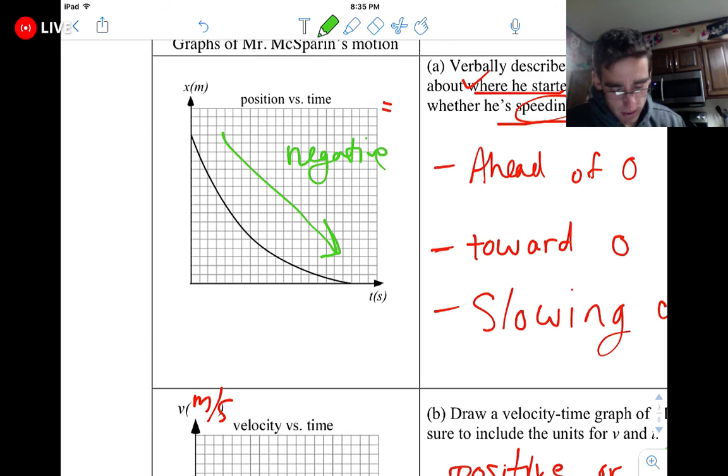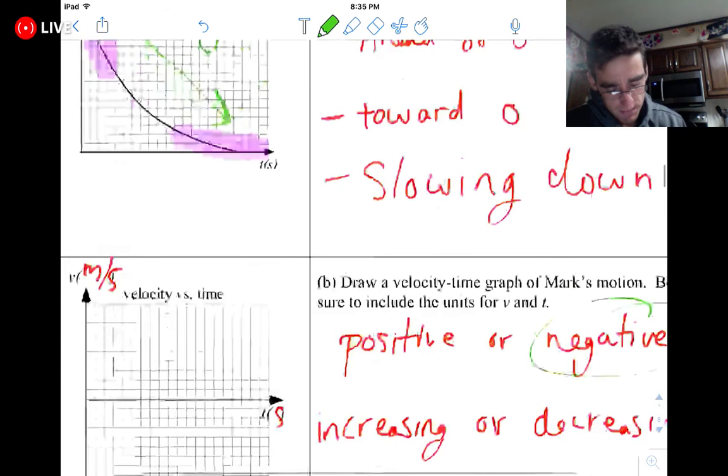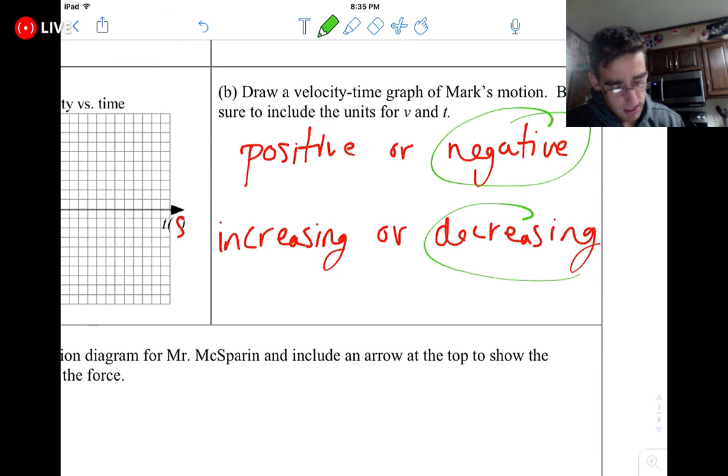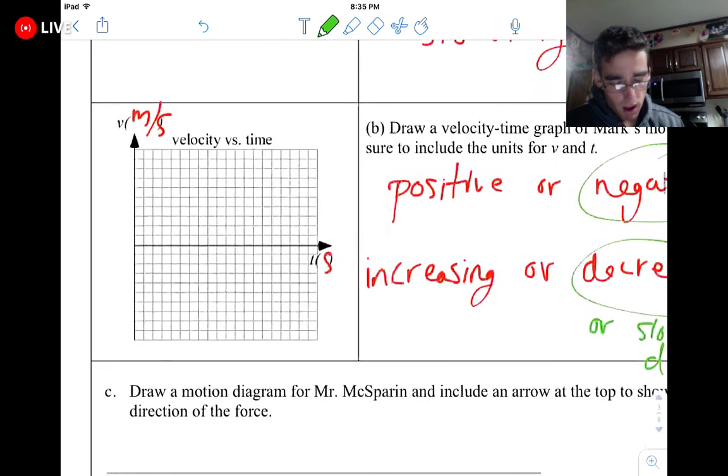Now the other thing I want to know is increasing or decreasing. So, again, we think about the little man. So is it getting steeper or less steep? Well, this starts off steep, and it gets less steep. So that means, to me, I'm seeing decreasing. Or we could also say slowing down. Maybe slowing down is a better way to say that. Decreasing means slowing down.